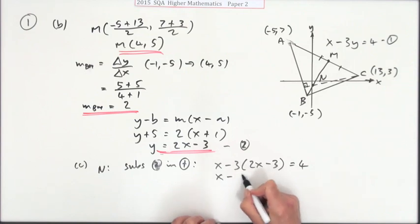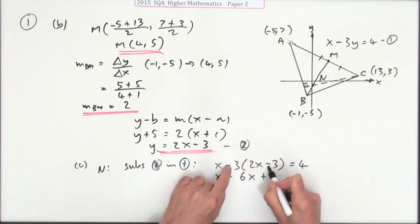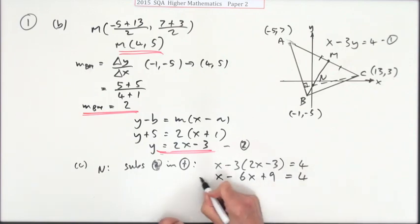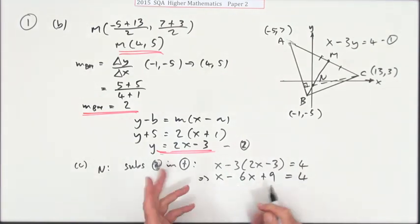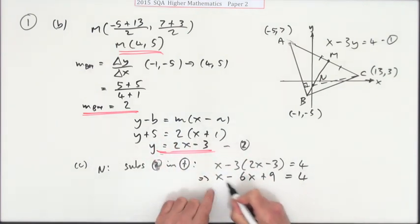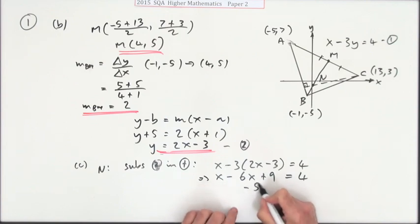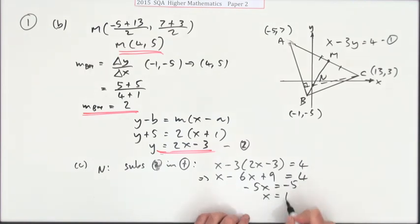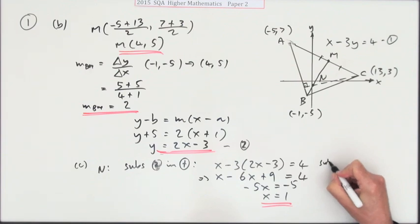So that's x minus 6x, but minus minus is plus 9, equals 4. Then you can see that it should pop them over to opposite sides but I'll just leave them. x take away 6x is minus 5x, 4 take away 9 is minus 5. So x equals 1.